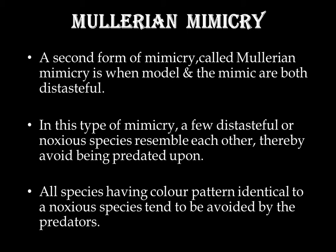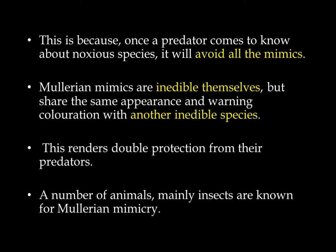Mullerian mimicry is the second type of mimicry, in which both the model and mimic are distasteful. In this type of mimicry, a few distasteful or noxious species resemble each other, thereby avoiding being predated upon. All species having a color pattern identical to noxious species tend to be avoided by predators. This is because once a predator comes to know about the noxious species, it will avoid all the mimics. Mullerian mimics are inedible themselves but share the same appearance and warning coloration with another inedible species — that means both mimics and models are inedible species.